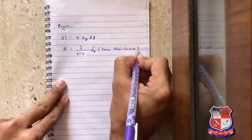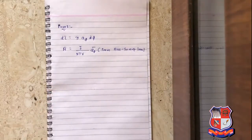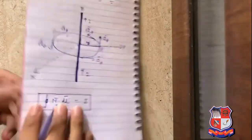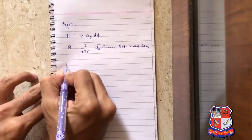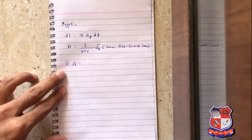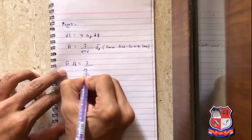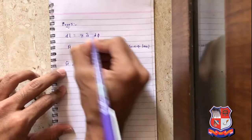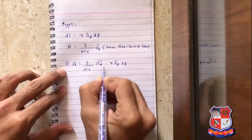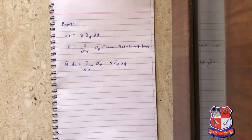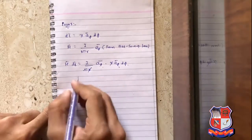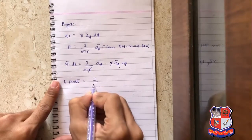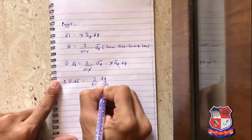From Biot-Savart Law, you want H̅ · dl̅. The equation for H̅ is I/(2πr) · a_φ̅, and dl̅ = r · a_φ̅ · dφ. Since a_φ̅ · a_φ̅ = 1 and the r terms cancel, H̅ · dl̅ = I/(2π) · dφ.